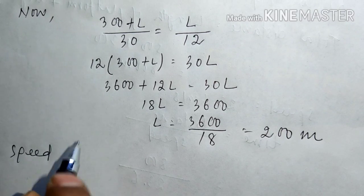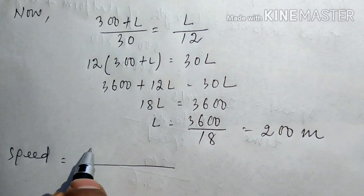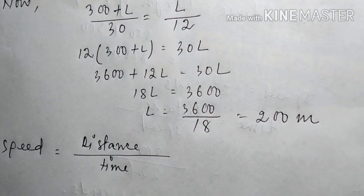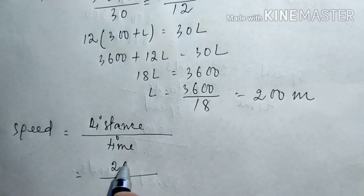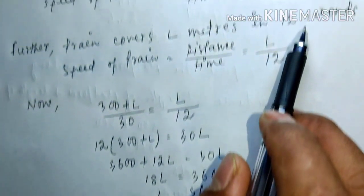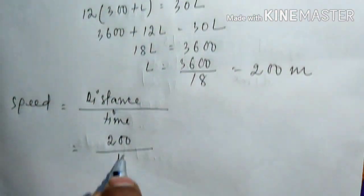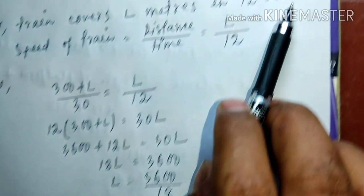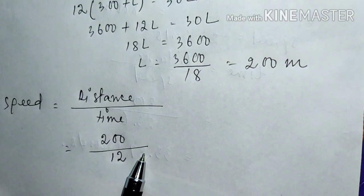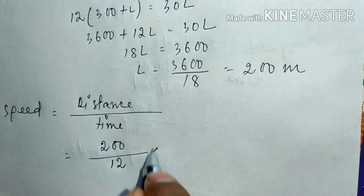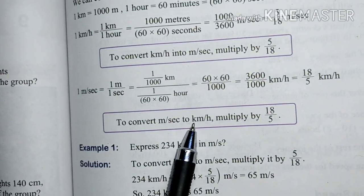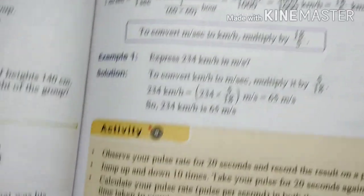Now we find the speed. Speed equals distance by time. The distance is 200 meters and the time is 12 seconds. This gives us speed in meters per second. To convert meters per second to kilometers per hour, we multiply by 18 by 5.